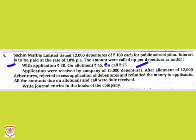After allotment of 12,000 debentures, the company rejected excess applications and refunded the money to those applicants. All amounts due on allotment and call were duly received. We have to write journal entries in the books of the company.